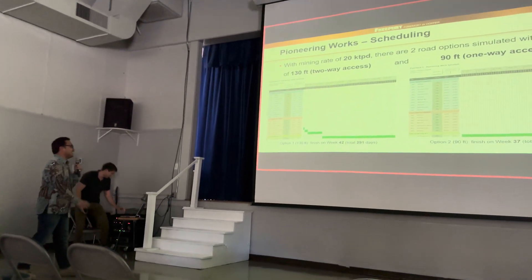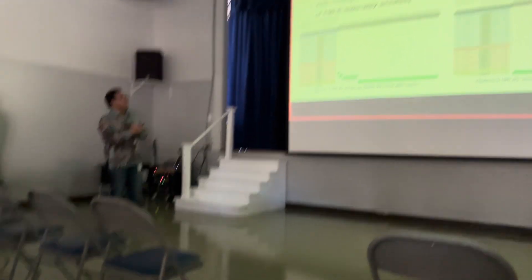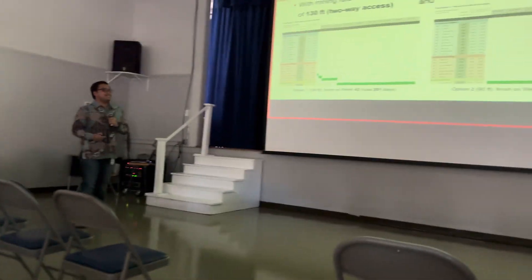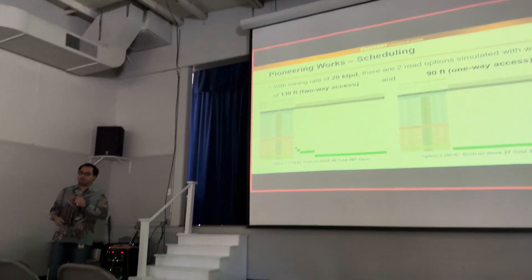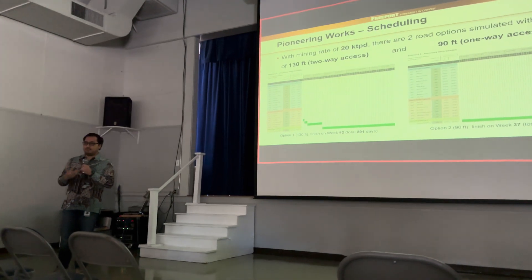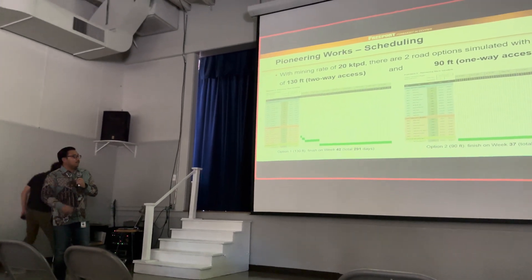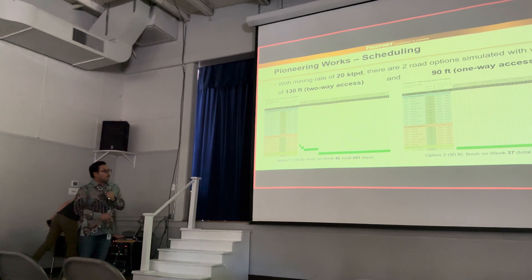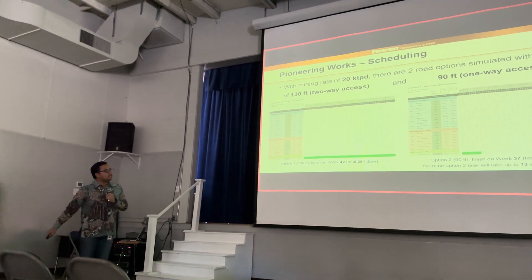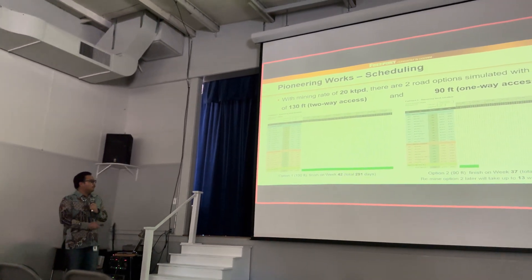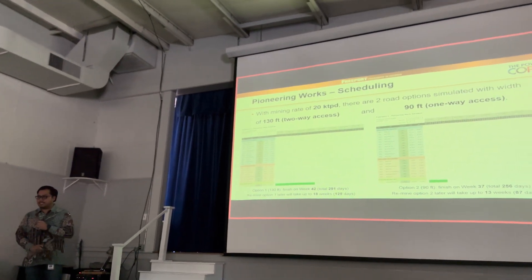After we finish the project, what will happen to our road and access? We need to remove it at some point. For option 2, road removal will take up to 30 weeks. For option 1, it will take up to 18 weeks.